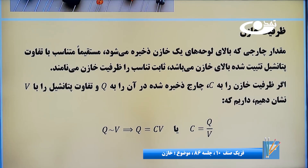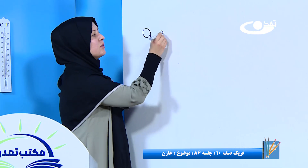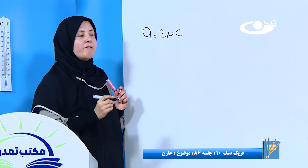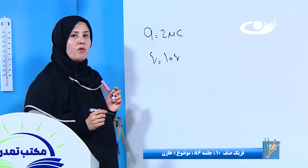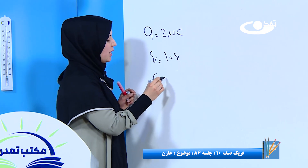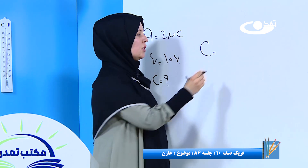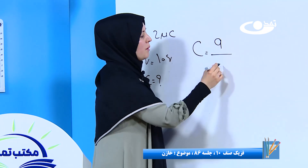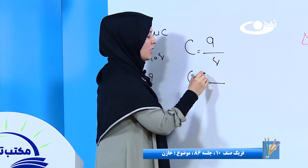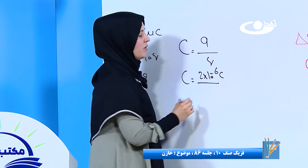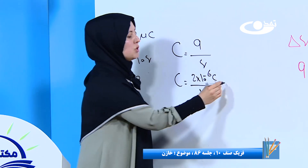حالا که رابطه را پیدا کردیم، بیایید یک مثال حل کنیم در رابطه با ظرفیت خازن. اگر مقدار چارجی که در یک مدار وجود دارد به اندازه دو میکروکولمب باشد و تفاوت پتانسیل هم ده ولت باشد، پیدا کنید که این خازن مورد نظر چقدر ظرفیت دارد. باید C را پیدا کنیم. رابطه: C مساوی است با Q بر V.